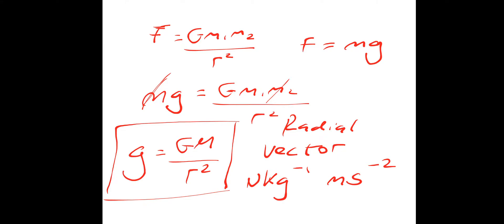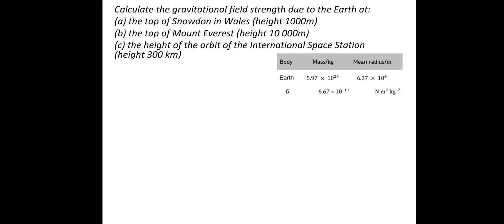Let's have a look at an example. We're going to calculate the gravitational field strength due to the Earth at three different locations: the top of Snowdon, the top of Mount Everest, and the International Space Station. If you want to have a go using that equation, just pause the video.